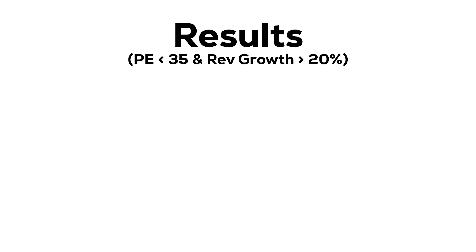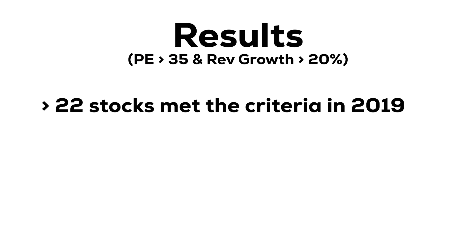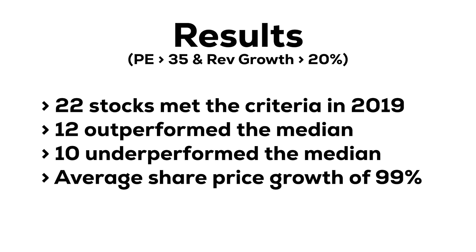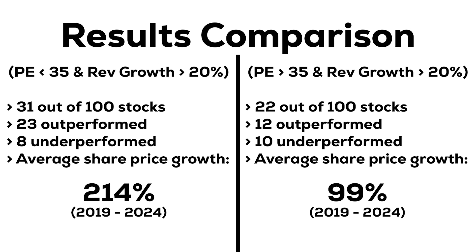But to make this a fair test, I needed to check whether choosing a P/E ratio below 35 was actually making a difference, or if it was just the high revenue growth. So I changed the selection to stocks with a P/E above 35 and kept the minimum five-year revenue growth at above 20%. This time, 22 stocks matched the criteria but only 12 outperformed, the other 10 underperformed, and the overall average share price growth was just 99% — compared to 214% in the first test.